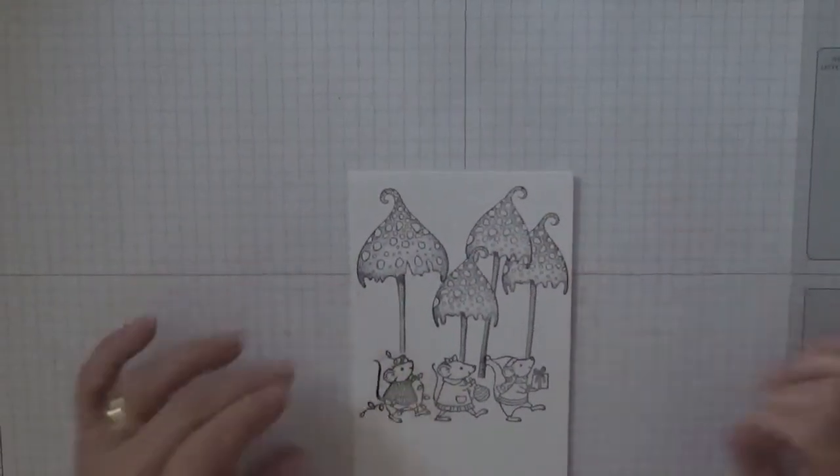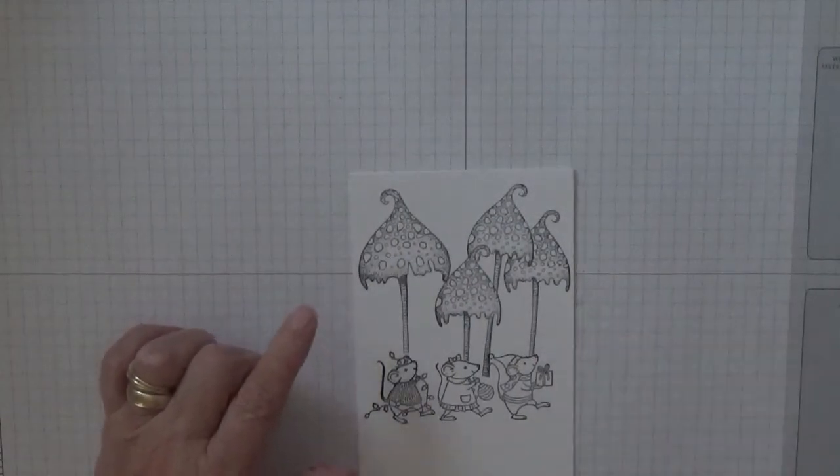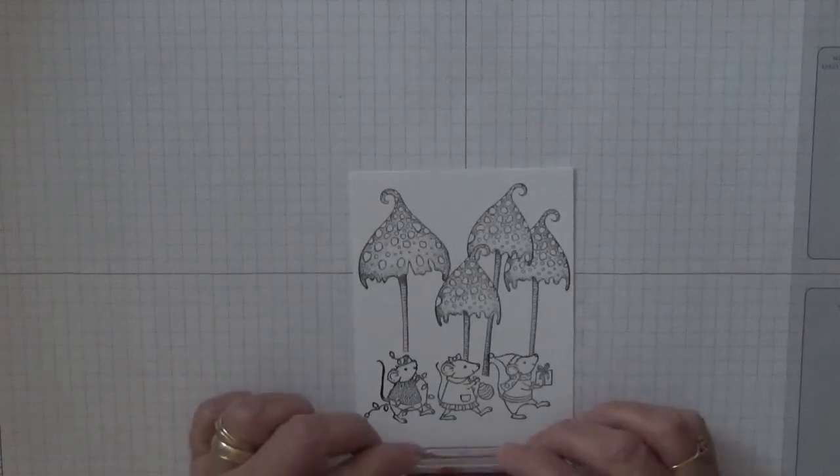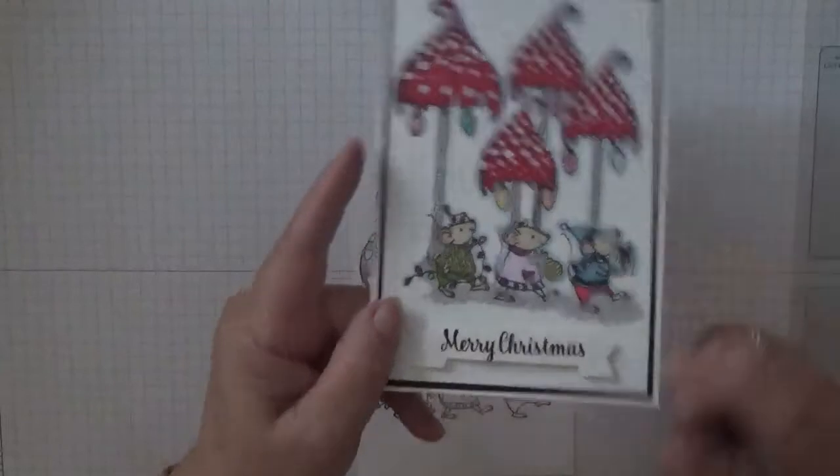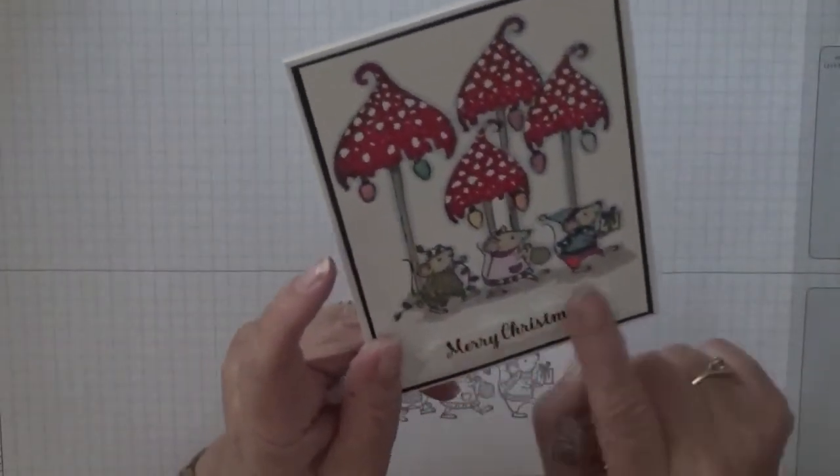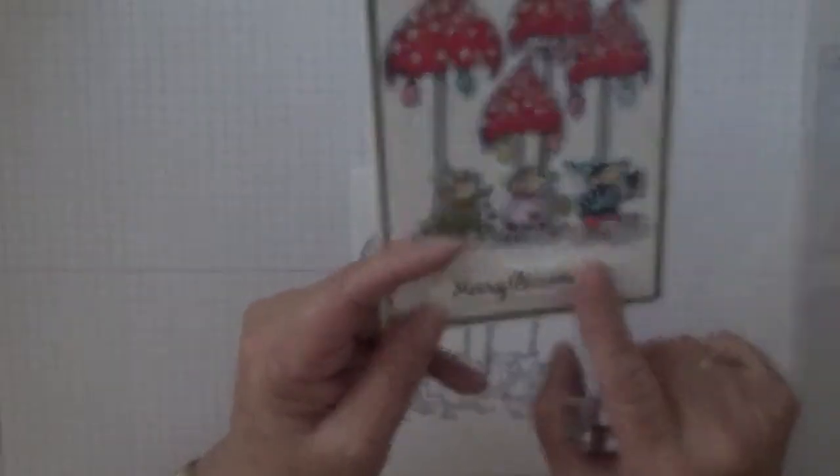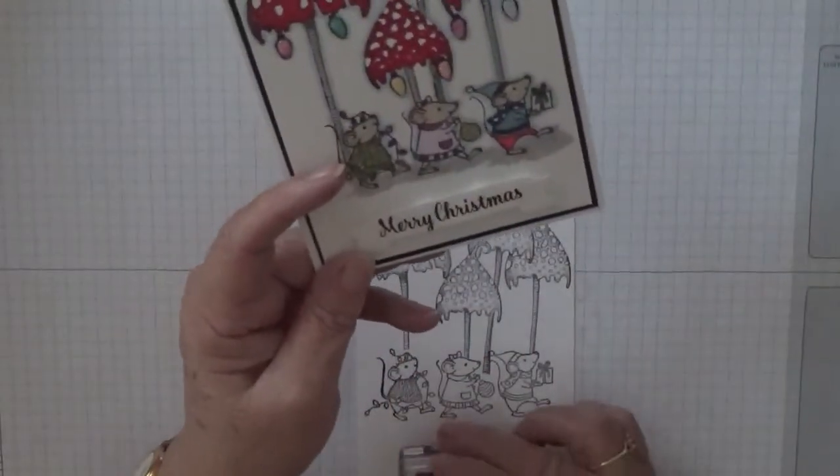Right then, now all we've got to do is color it in. Now I have got a Merry Christmas, but on this one I actually put it under here and it didn't stamp very well. So I've got this banner and stamped Merry Christmas on there. But on this one I'm actually going to put it flat.